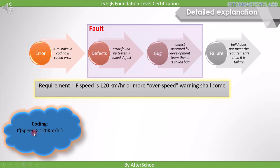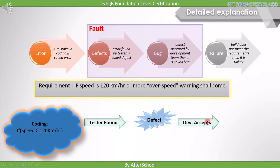If this mistake is found by a tester, then it is a defect. If the developer confirms that yes, it's a mistake, then it will be called a bug. Normally, the developer finds out how many bugs there are, while the tester just says there is a defect. This is how these terminologies are used in an organization, and this stage is called a fault.